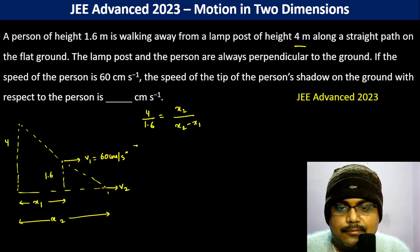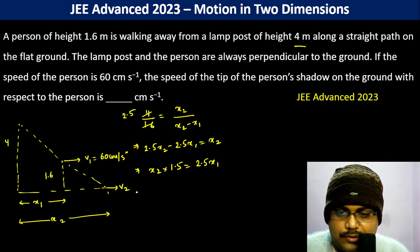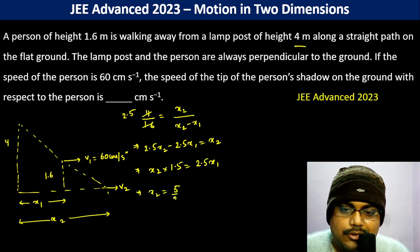This goes as 2.5, so 2.5x2 minus 2.5x1 equals x2. So 1.5x2 equals 2.5x1. Therefore x2 becomes 5 by 3 into x1.